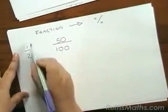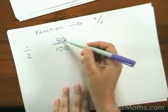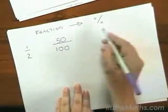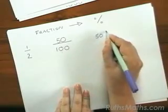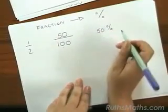So we found an equivalent fraction of a half, but it's out of 100. Now 50 divided by 100 is the same as 50 percent, because divide by 100 means percent.